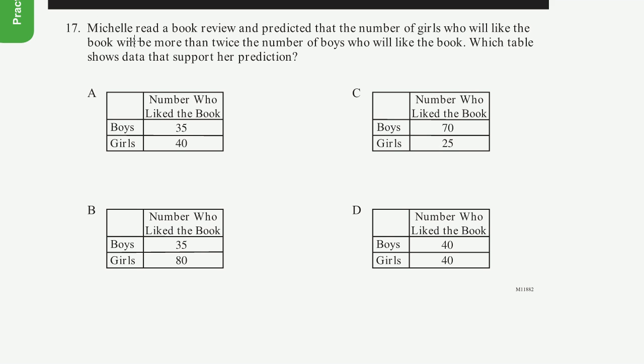Problem 17. Michelle read a book review and predicted that the number of girls who will like the book will be more than twice the number of boys who will like the book. So she predicted that the girls would be more than twice. Let me box that out. More than twice the number of boys who will like the book. Which table shows data that supports her prediction?